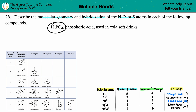The first thing is knowing which element goes in the middle. Remember, hydrogen is never in the center, so it's between phosphorus and oxygen. The least electronegative element always goes in the middle — that's phosphorus. Looking on a periodic table, phosphorus goes in the center.